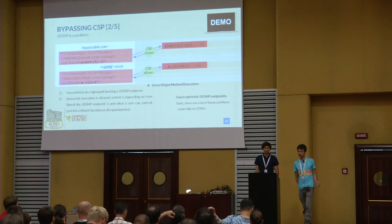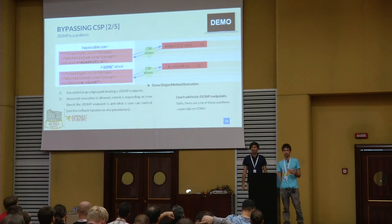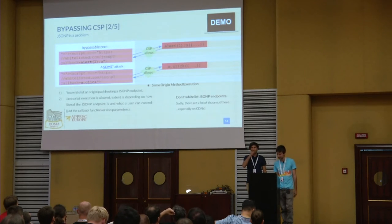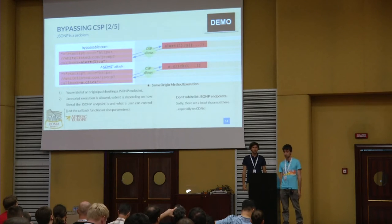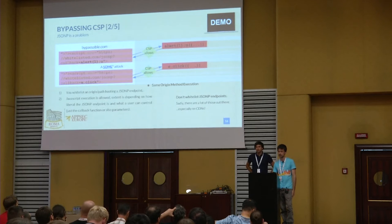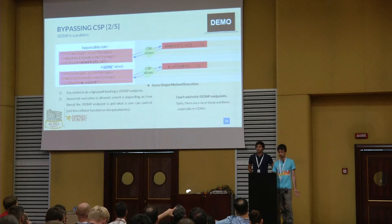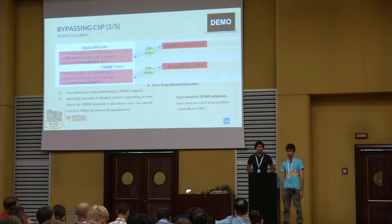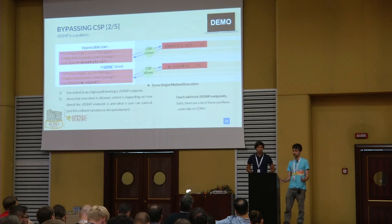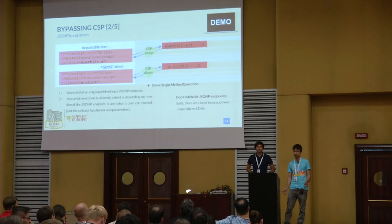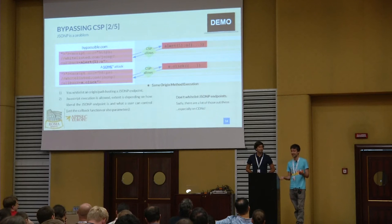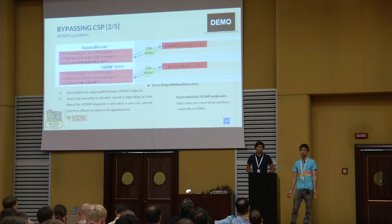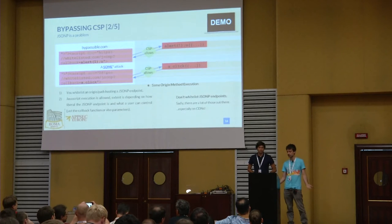JSONP endpoints are really a useful tool for attackers — they keep giving. They're still present in most APIs because a lot of APIs still allow a callback parameter for passing data across domains. What we're saying now is that we can't whitelist CDNs as script sources, which is pretty bad. You can't whitelist ajax.googleapis.com — one of the most important CDNs — just because it hosts a JSONP endpoint.